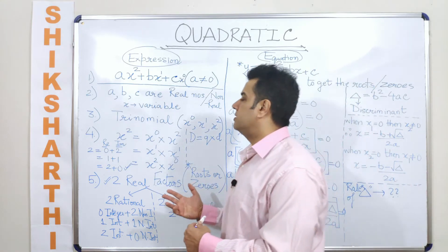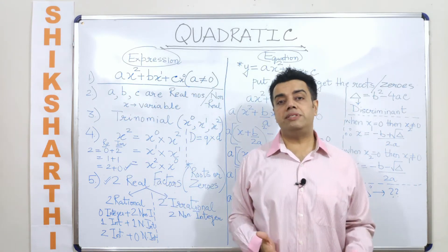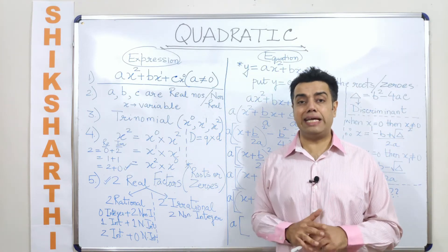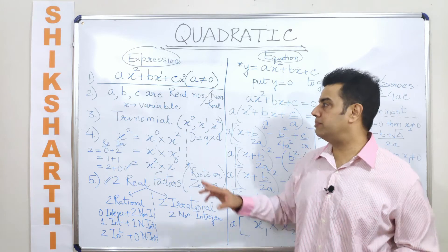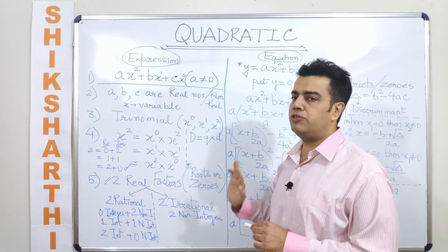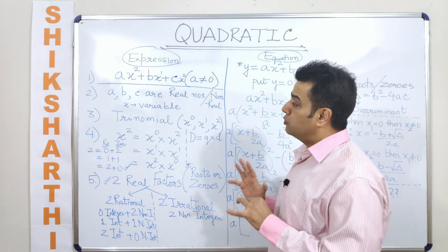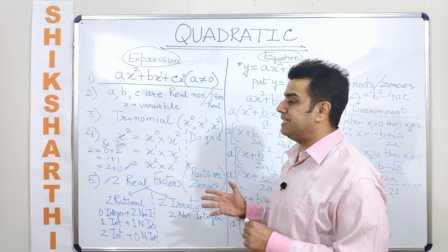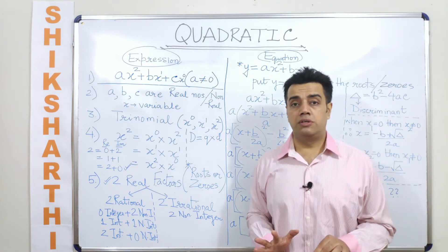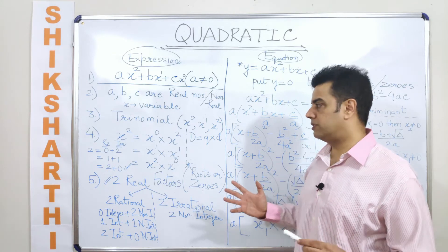But even before this, we were talking about the role of a, b, c. We know that a, b, c are coefficients, but what values can they take? They can take any value. When I say any value, I mean a, b, c can be either a real number or a non-real number. But the most important point here is b and c can take a value of zero, but a cannot take a value of zero.